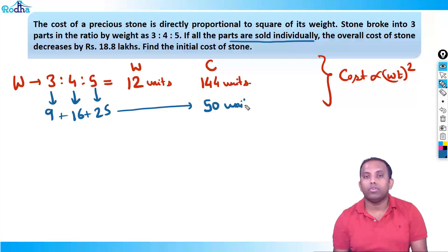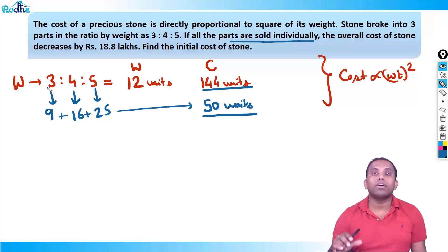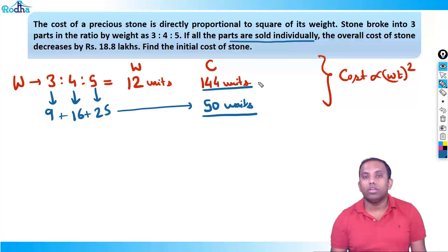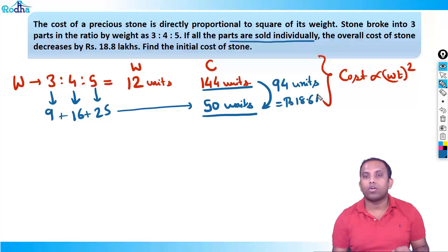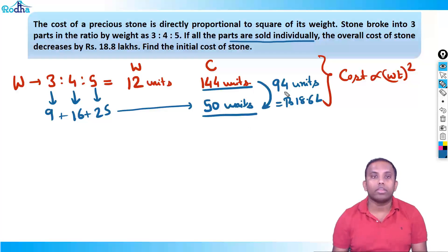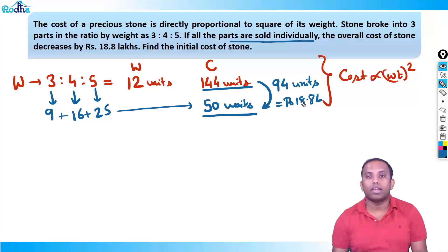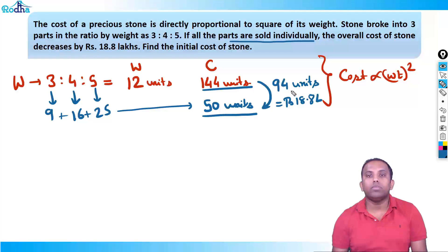Total cost is now 50 units. Earlier it was 144 units. So if all three broken parts are sold individually, the total is 50 units, and cost has decreased by 94 units. That decrease of 94 units equals rupees 18.8 lakhs according to the question. You can see 94 doubled is 188, so that gives us 18.8 lakhs.